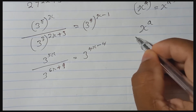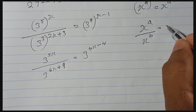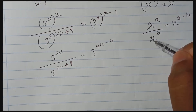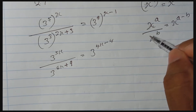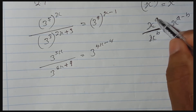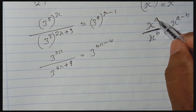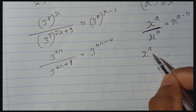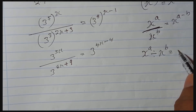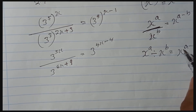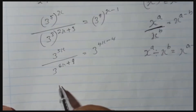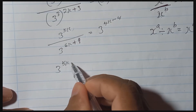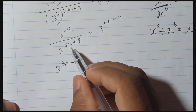Now, the rule we apply here: x to the power a divided by x to the power b means you can write x to the power a minus b. When you have the same base and a division, you subtract the indices. Here the base is 3 on both sides — 3 here, 3 here — so we can write: for the 3 to the power, take 5x and subtract the other index very carefully.